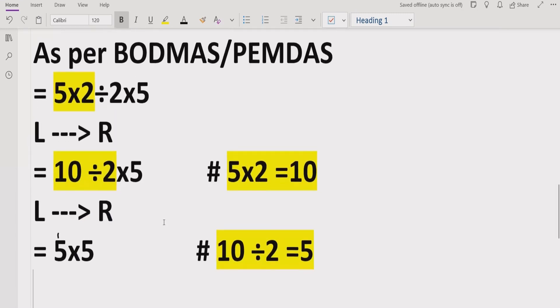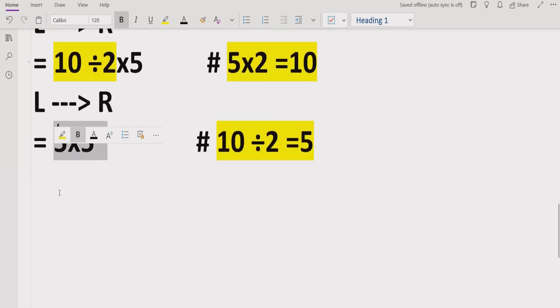Now again we have two numbers which are multiplying each other. So now we will multiply 5×5, that's 25. So the answer of this question is 25. The correct answer of this question is 25.